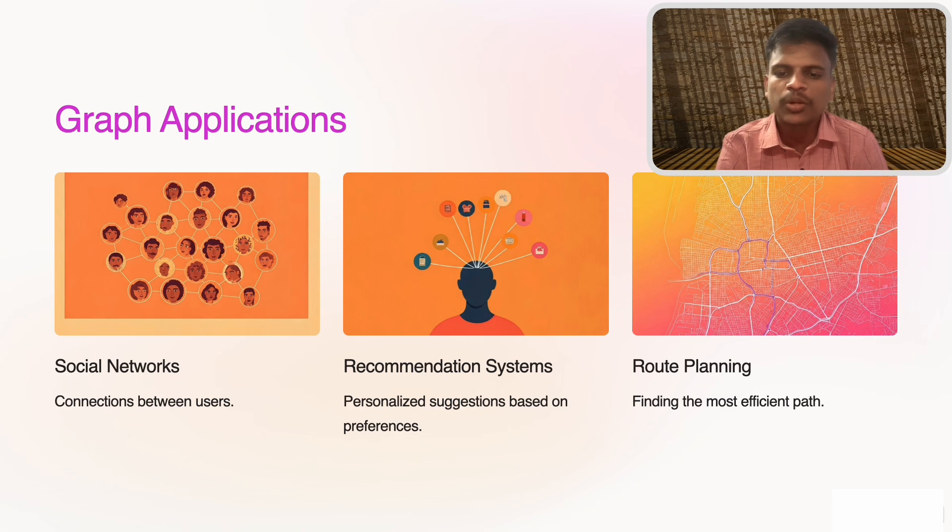To summarize: graphs provide a structured way to represent relationships and connections. We discussed different types of graphs—undirected, directed, and weighted; graph representations—adjacency matrix and adjacency list; graph traversal methods—DFS and BFS; and practical applications of graphs in real life. Graphs help us visualize and analyze relationships, and they are fundamental to many algorithms in computer science.